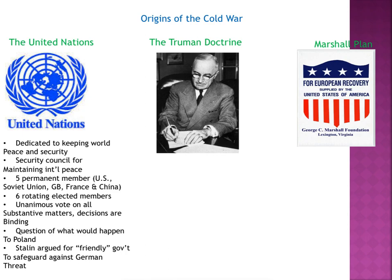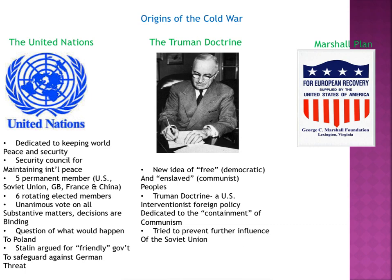The question after World War II was what would happen to Poland. The U.S. felt it should be free and democratic. The Soviet Union felt they should play a role in influencing it — Stalin argued for a friendly government to safeguard against the German threat. The Truman Doctrine was a new idea — a free democratic policy — a U.S. interventionist foreign policy dedicated to the containment of communism. Countries that are already communist are already communist; we just don't want it to spread to other countries.